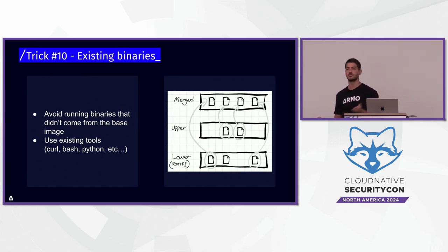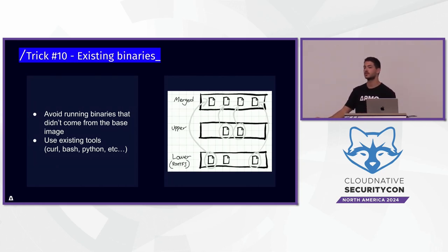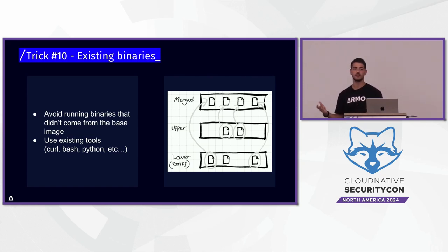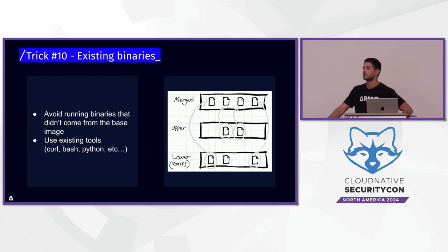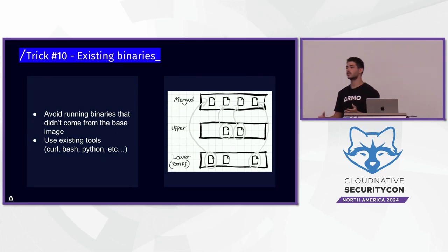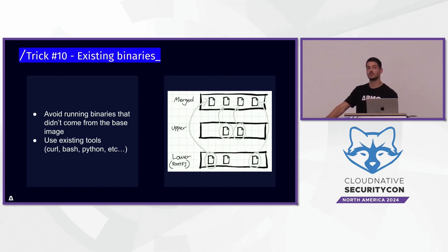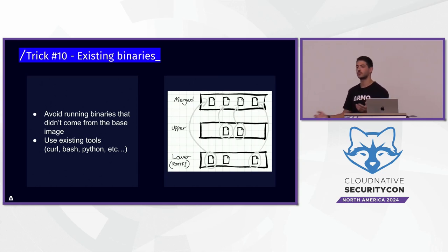An attacker can easily avoid that detection by just using tools already in the image. For example, if curl or bash is on the machine, you don't need to download kubectl to talk to the API server — you can use curl that's already there and prevent that fingerprint. As a mitigation, if you want to detect your containers better, try to use minimal or distroless images, which will force the attacker to download tools from outside, and then you can detect them.